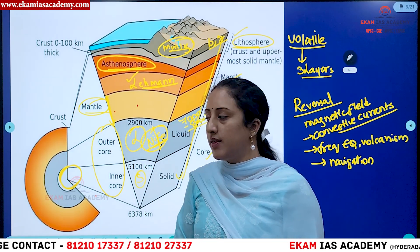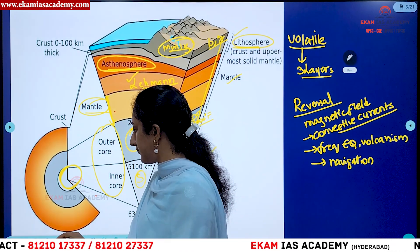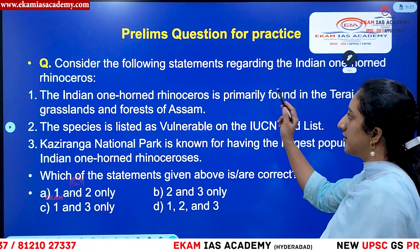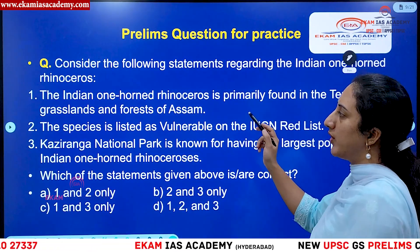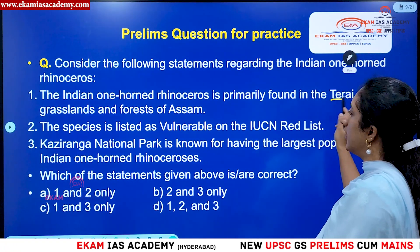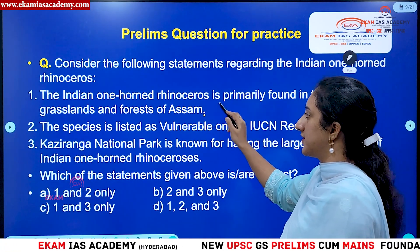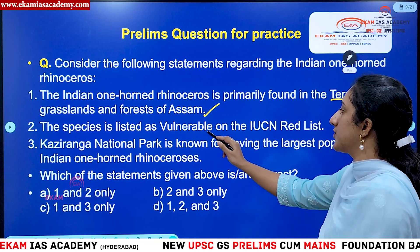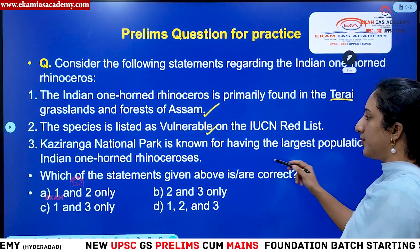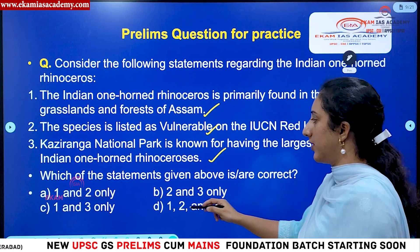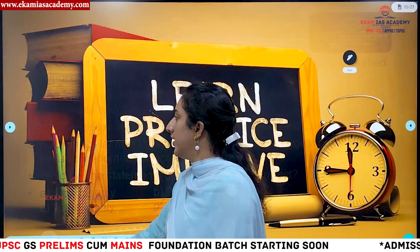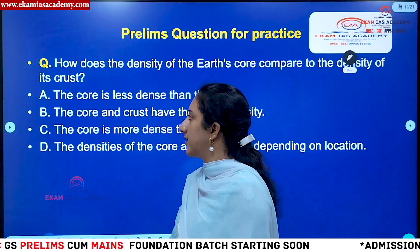Now let us review the practice question from yesterday regarding the Indian one-horned rhino. The one-horned rhinoceros is primarily found in Terai grasslands and forests of Assam — correct. It is listed as Vulnerable on the IUCN Red List — correct. Kaziranga is known for having the largest population of one-horned rhino — also correct. Population-wise it is the highest, while density-wise Pobitora has the highest density.